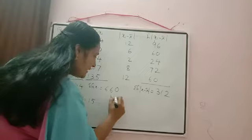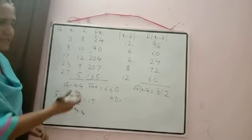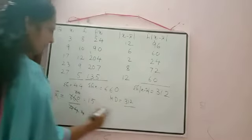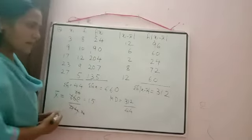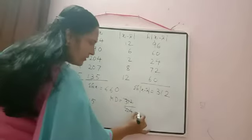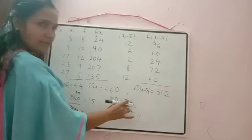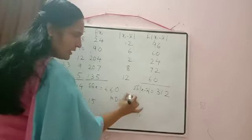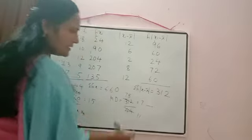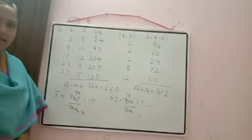Mean deviation = Σfᵢ|xᵢ − x̄| / Σfᵢ = 312/44. Cancel by 4: 78/11. 11×7=77, so 78/11 ≈ 7.09. You can write down the answer. I think it is clear. Now we will discuss the next type.